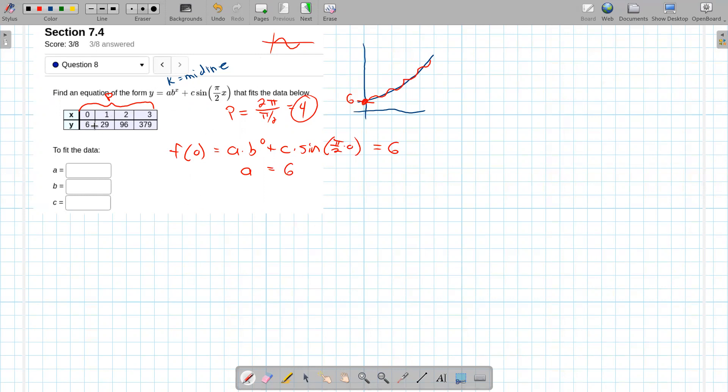So let's try 1 next. What does f of 1 give us? So f(1), now we know a is 6, so let's use that, times b to the 1, plus c, times the sine of π over 2, times 1. And that is supposed to equal 29. And sine at π over 2 is 1. So this is going to give me 6b, plus c times 1, or just c, equals 29.